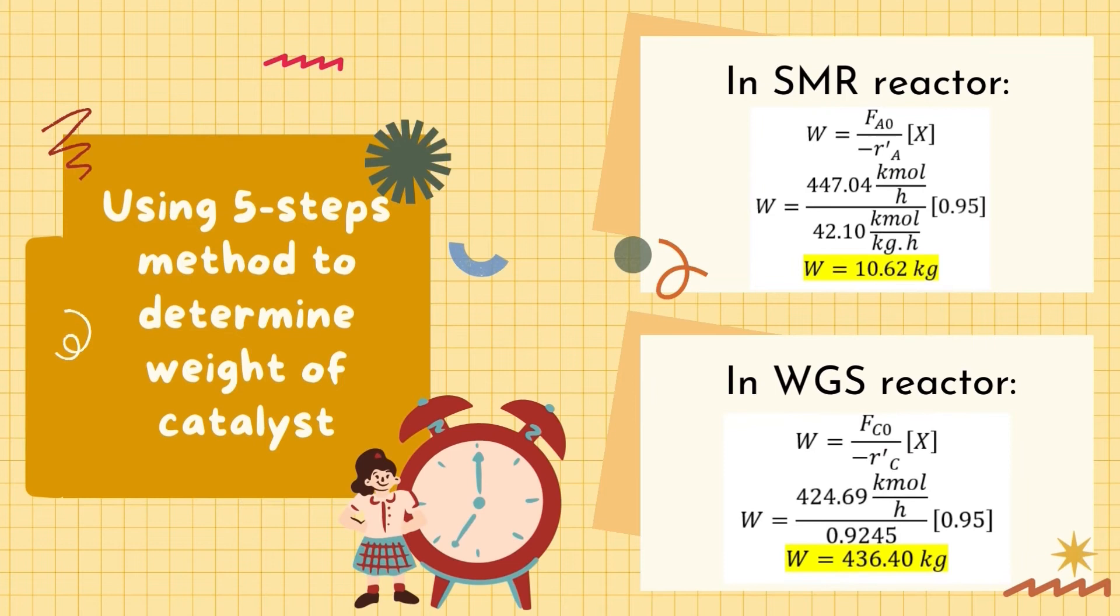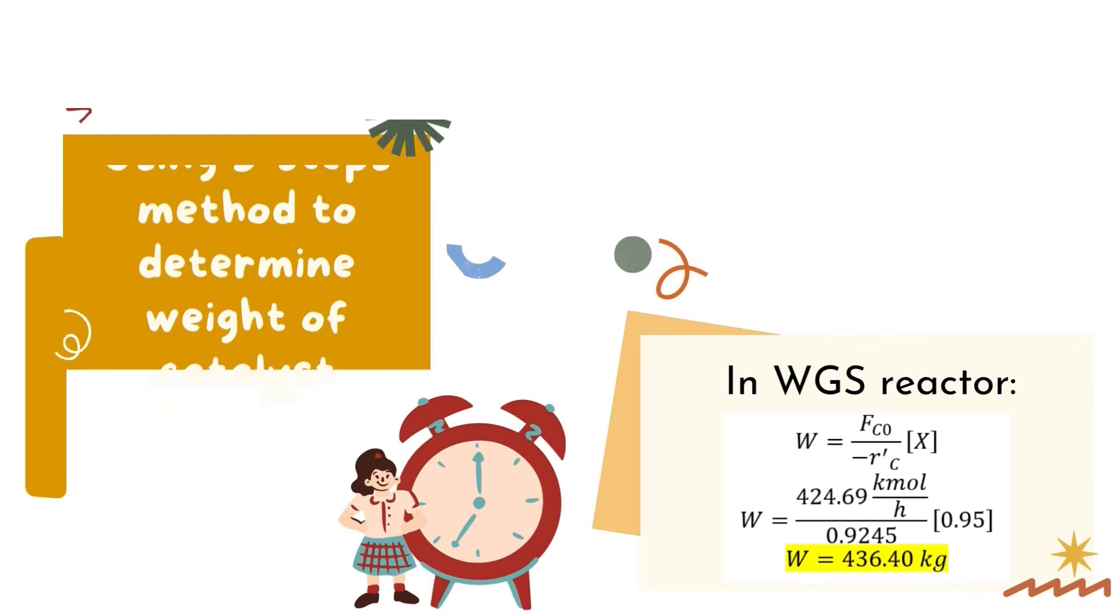After completing the necessary calculation, the five steps method is used to determine the weight of catalyst in each reactor. The weight of catalyst in SMR and WGS reactor is 10.62 kg and 436.4 kg respectively. It can be observed that the weight of catalyst for WGS reactor is higher than SMR due to it having lower reaction rate, hence more catalyst is needed to speed up the reaction.